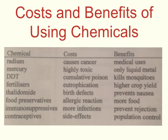Food preservatives are another example. Chemicals such as sulphur dioxide can be used to preserve foods, making them last longer. The problem is that particular people develop allergic reactions to certain preservatives, which can obviously be a potential issue.